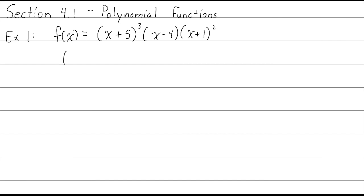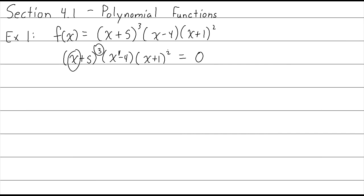So we have (x+5)³ times (x-4) times (x+1)² equals zero. This polynomial has x to the third power, then 3, another one — 4, and then 5, 6. This is a degree 6 polynomial. The zero product property is what you use when you have something split into multiplication set equal to zero, like we have here. This times itself three times, times this, times this twice — lots of multiplication, all equal to zero.